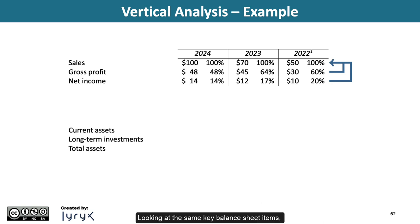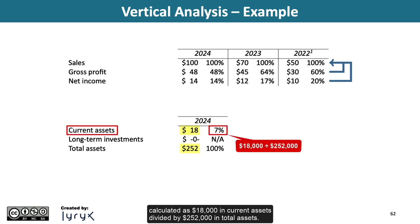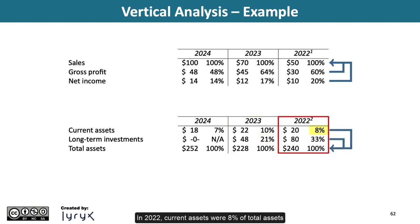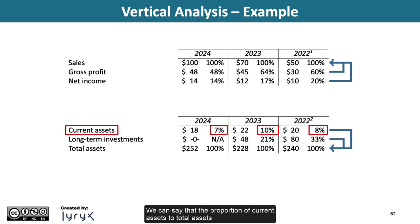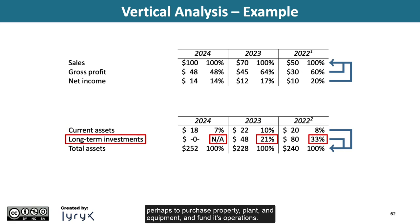Looking at the same key balance sheet items, in 2024 current assets comprised 7% of total assets, calculated as $18,000 in current assets divided by $252,000 in total assets. In 2023, current assets were 10% of total assets and long-term investments were 21% of total assets. In 2022, current assets were 8% of total assets and long-term investments were 33% of total assets. The proportion of current assets to total assets was relatively stable over the three-year period, between 7% and 10%. The proportion of long-term investments decreased over the three years as the company sold off its long-term investments, perhaps to purchase property, plant, and equipment, and fund its operations.